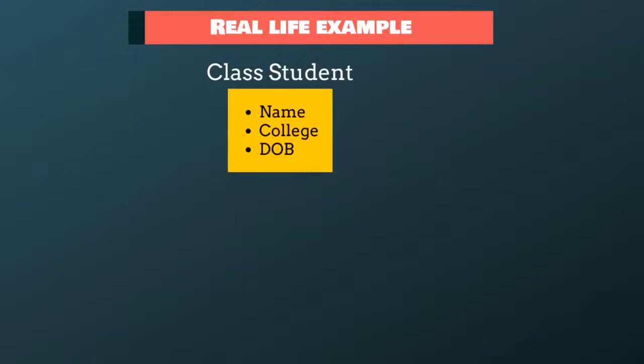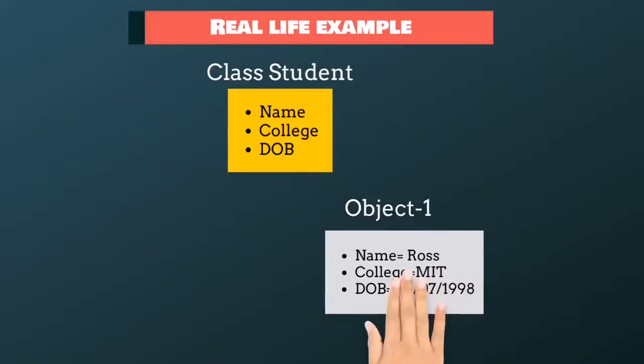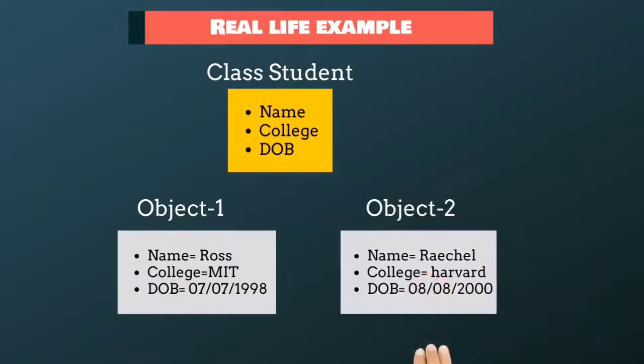Now, I want to create two objects of the class student. When we create objects, Java will create a separate copy of this variable for every object.